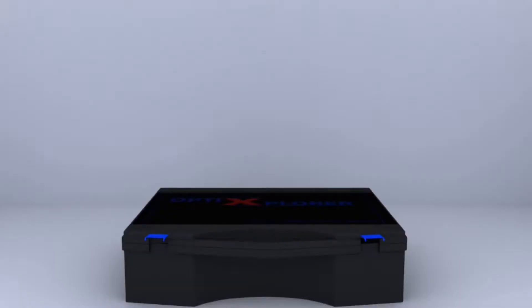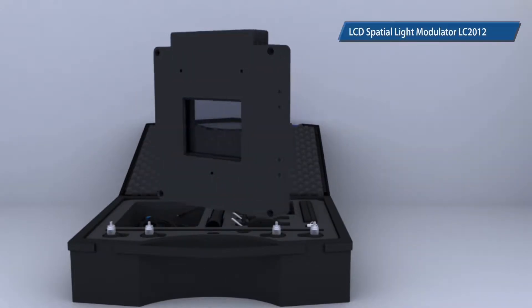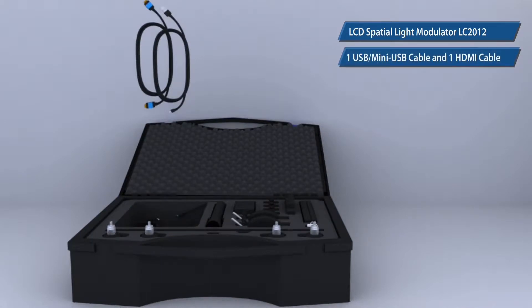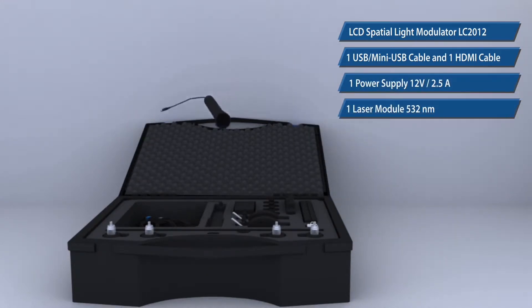The Opti-Explorer Education Kit contains the following components: 1 LC2012 LCD Spatial Light Modulator, 1 USB to mini USB cable and 1 HDMI cable, a 12 volt power supply for the SLM, 1 532 nanometer laser module.